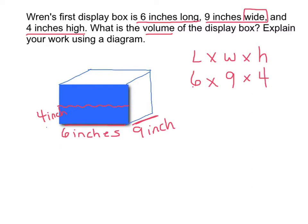Now it's time for us to multiply our length times our width times our height. Let's start with the length and the width. 6 times 9 is 54 times 4, which equals 216 inches cubed. We cannot forget to write cubed because we're dealing with a prism.